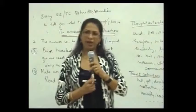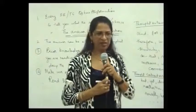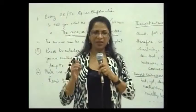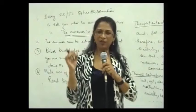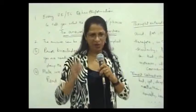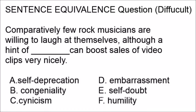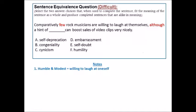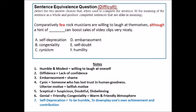Let's once again summarize what we have learned so far. The sentence equivalence and text completion questions require us to learn to read critically. The intention is to use our reasoning to pinpoint and gather the information from the questions and go for the correct word. For example, the passage says comparatively few rock musicians are willing to laugh at themselves. This willingness to laugh at yourself we have looked at as being humble and modest, and you immediately catch option F, which is humility — fitting very perfectly with our context.